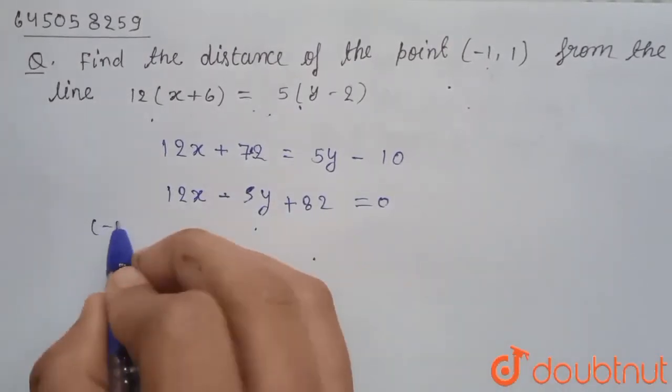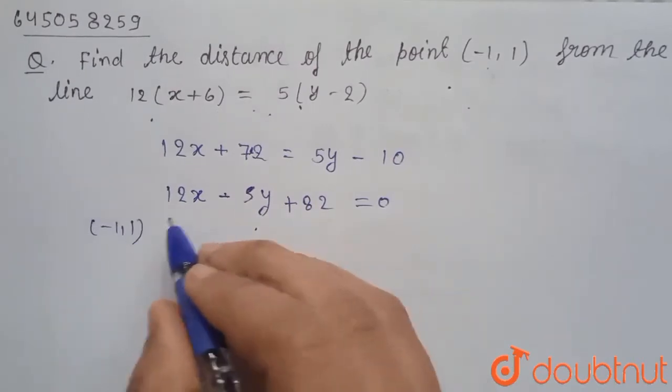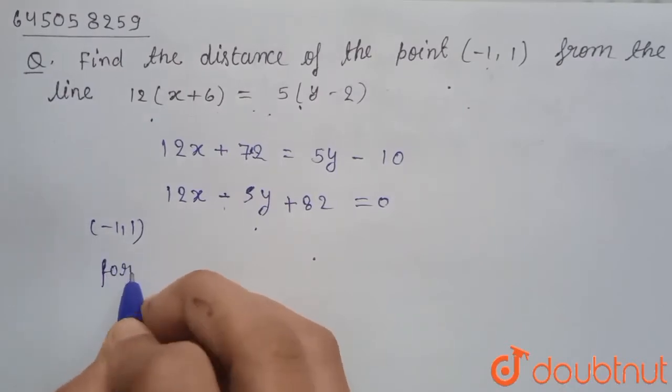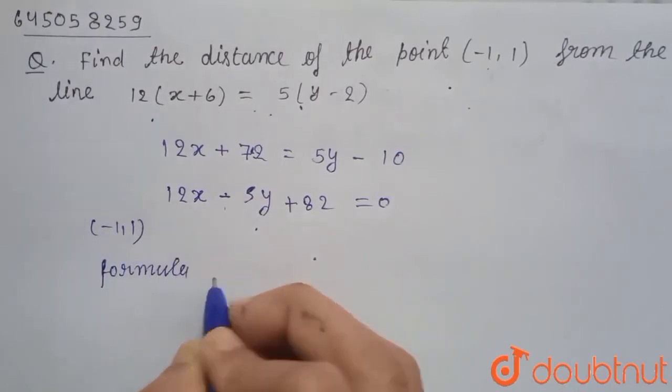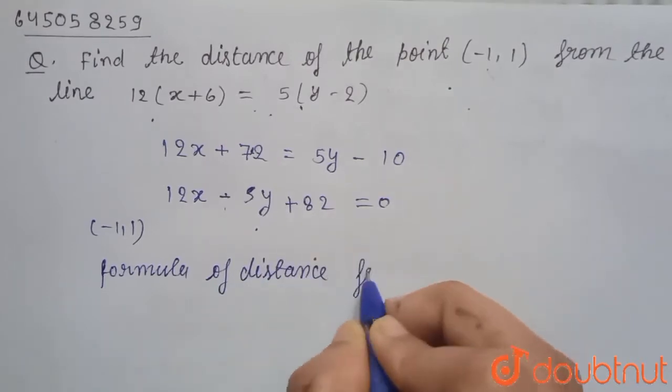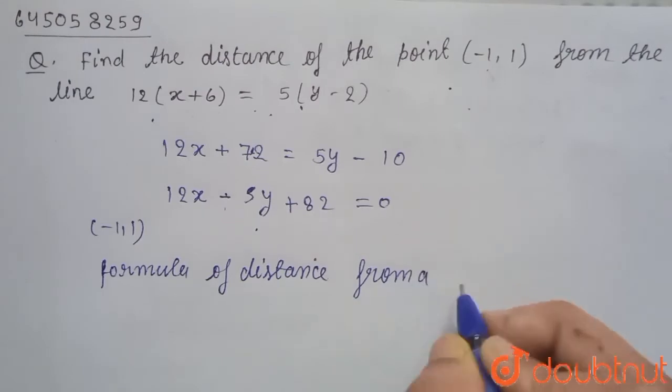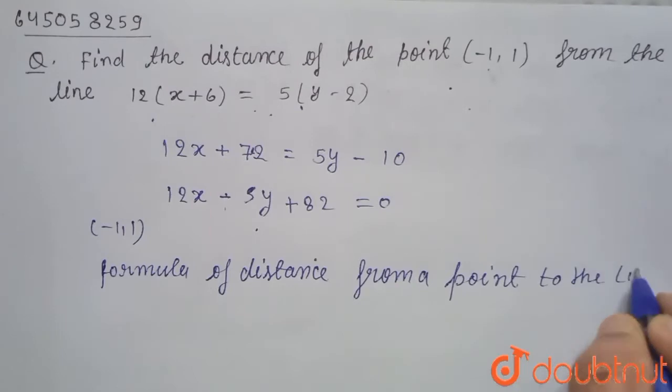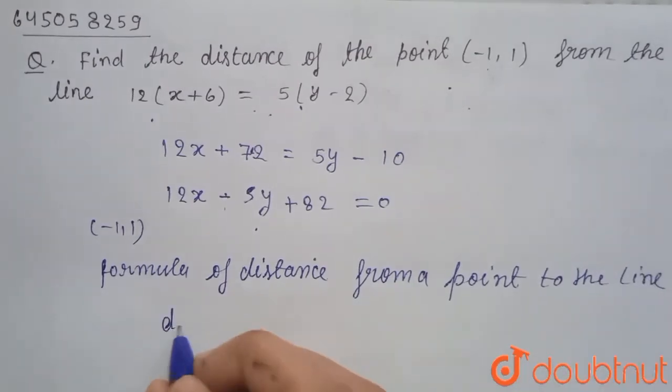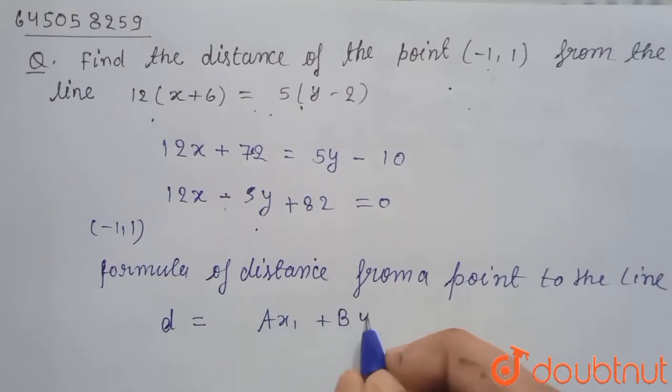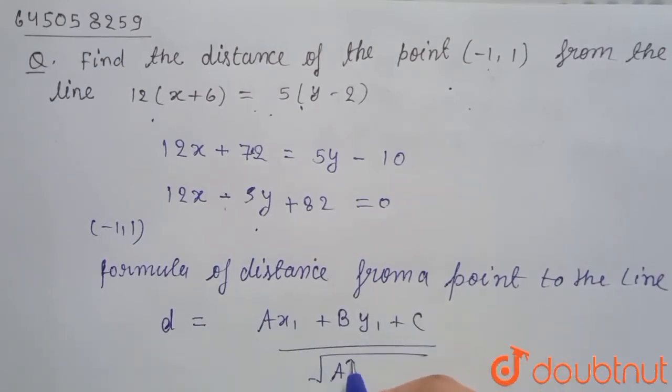So we know that the formula of distance from a point to the line is d equals to |Ax₁ + By₁ + C| upon square root of A² plus B² in mod.